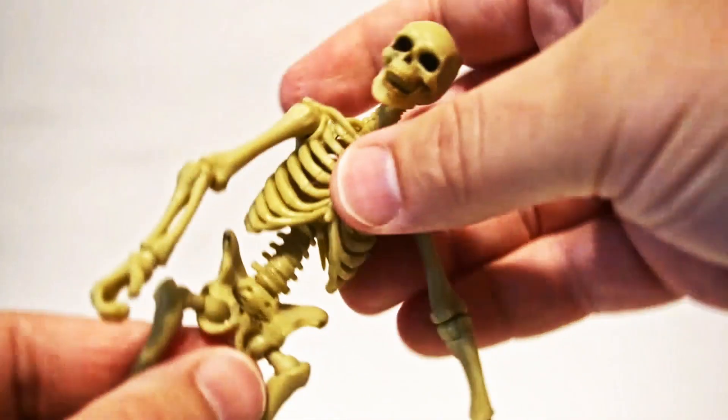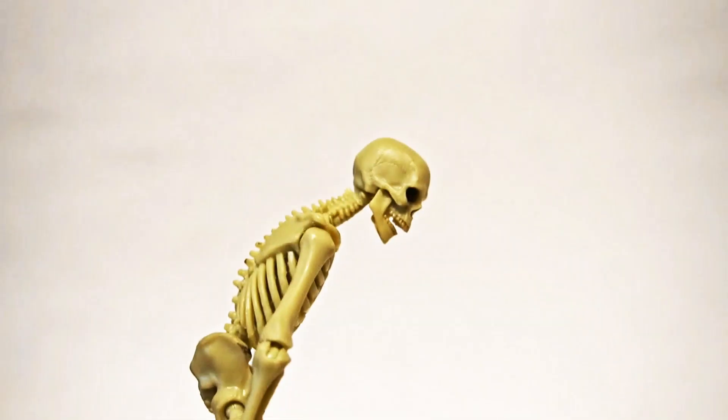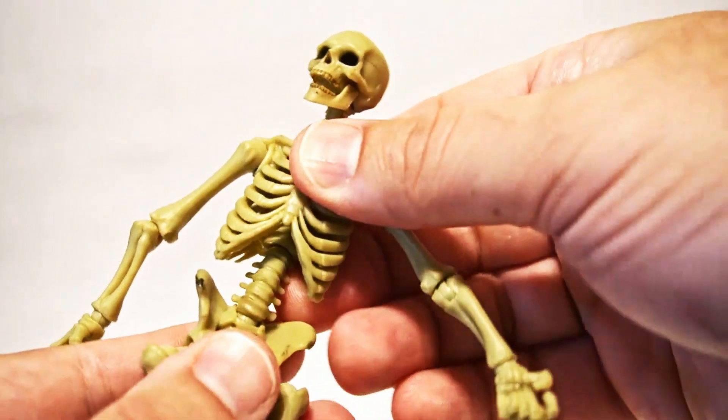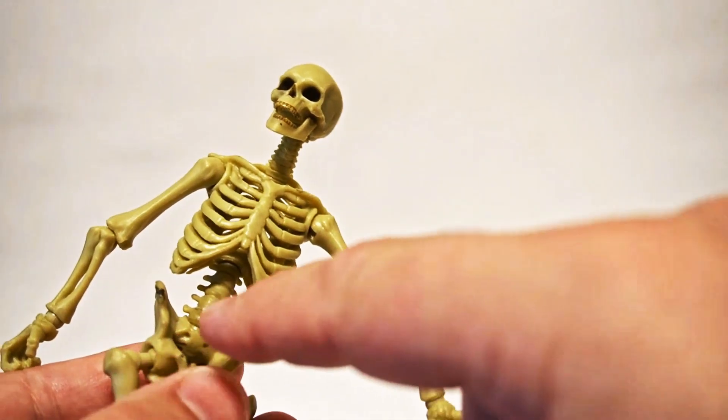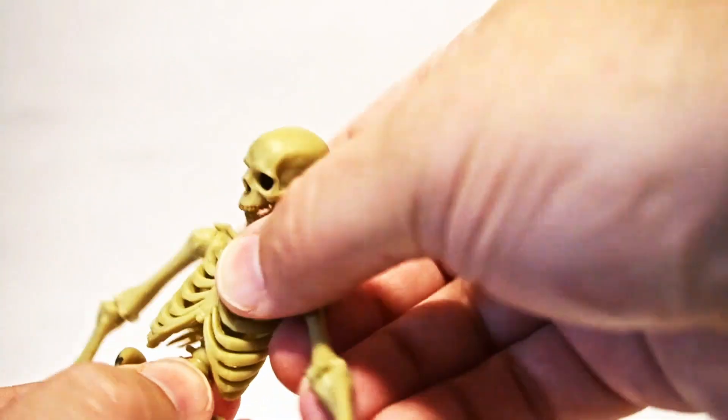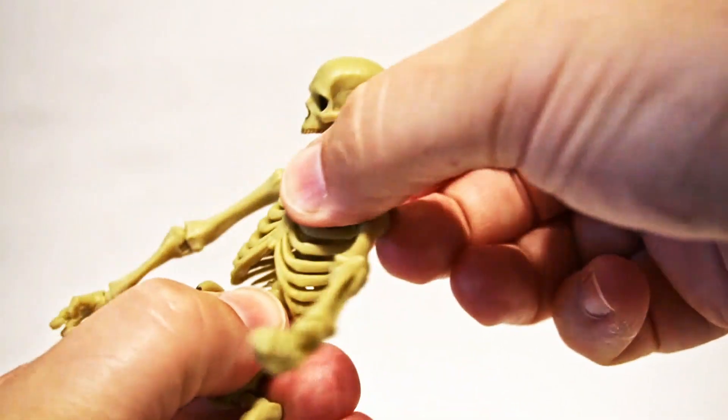As far as his torso, we do have an ab crunch. That is actually bending down here at the pelvis. The spine is separated in two spots. So we have a little bit of movement down there at the pelvis. And then we also have one kind of mid spine that allows him to rotate.